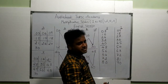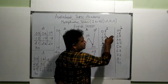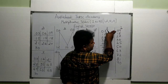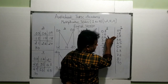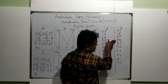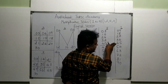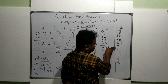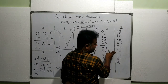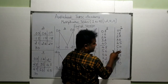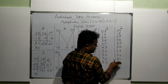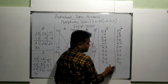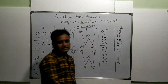Now the ninth table is ready. Let's see: 9 ones are 9, 9 twos are 18, 9 threes are 27, 9 fours are 36, 9 fives are 45, 9 sixes are 54, 9 sevens are 63, 9 eights are 72, 9 nines are 81, and 9 tens are 90. That's it!